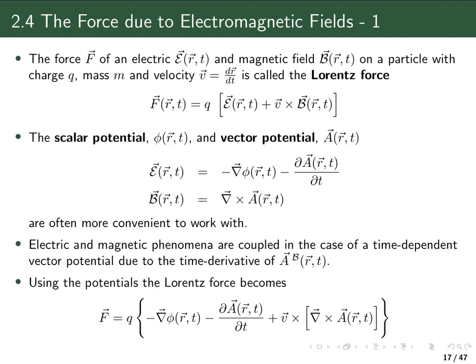A second thing which you should note is as soon as we have the vector potential which is time dependent, then the electric and the magnetic phenomena are coupled, because you get the magnetic field as the curl of the vector potential whereas you get a contribution to the electric field from the time derivative of this vector potential.